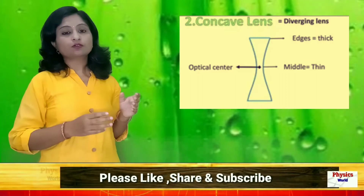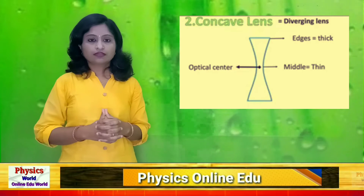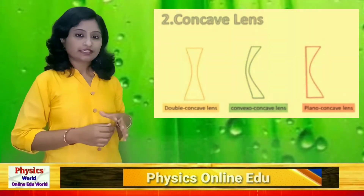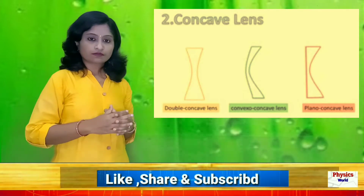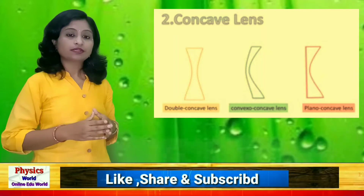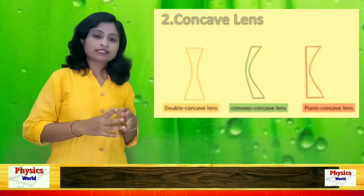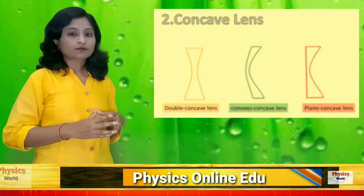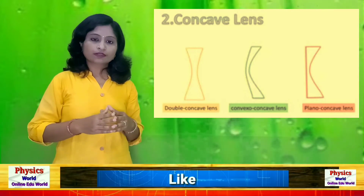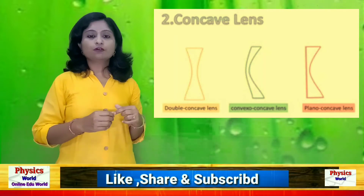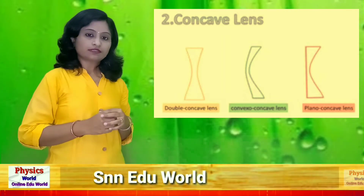In the concave lens, the sides are thick and the center is thin. There are again three types. The first type is double concave — both sides are concave. The second type is convexo-concave — one side is convex and the other is concave. The third is plano-concave — one side is plane and the other is concave.